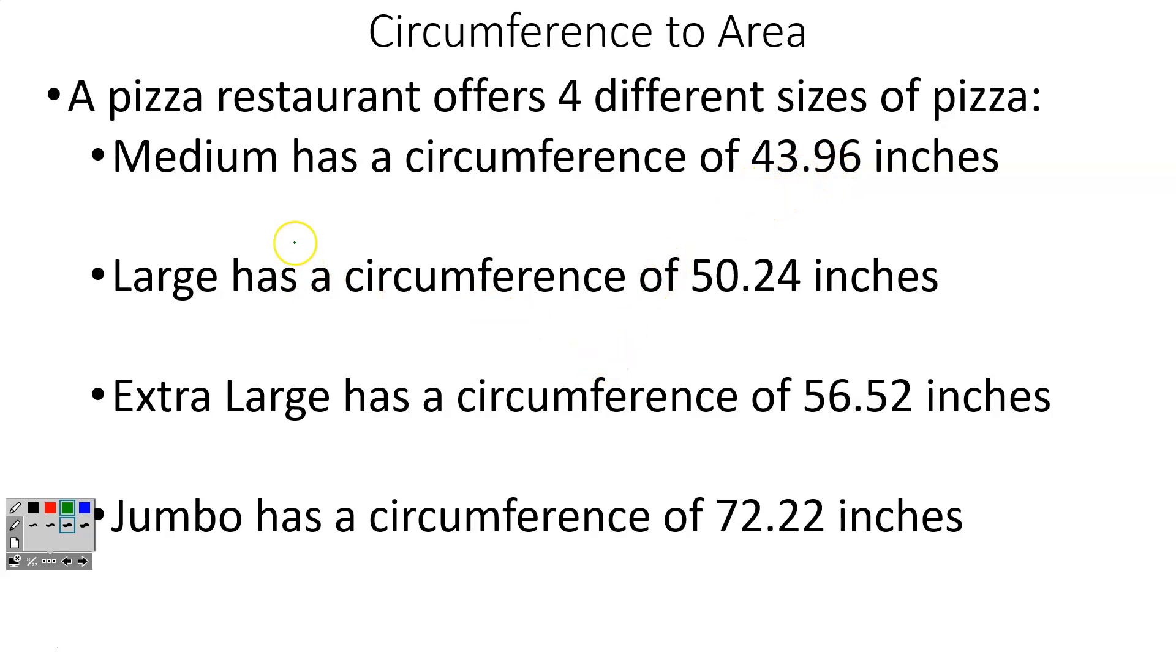We have to find the areas for these. So I need to do my circumference, which is 43.96 divided by 3.14. When I do that, I do 43.96 divided by 3.14, and I get an answer of 14. So that's diameter.